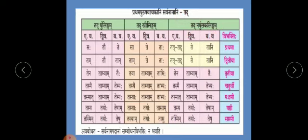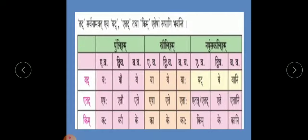As with the tad pronoun, there are many other pronouns. The kim pronoun is used for making questions in Sanskrit. The yad pronoun forms are: yah, yau, ye, ya, ye, ya, and likewise. The etat pronoun forms are: eshah, etau, ete, esha, ete, etah, etat, etat, ete, etani, and likewise from dvitiya vibhakti.